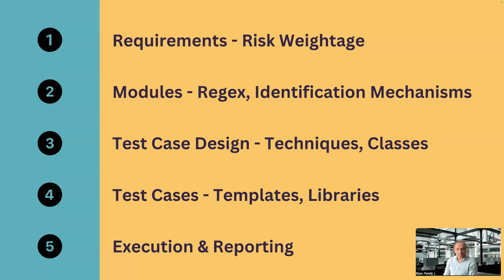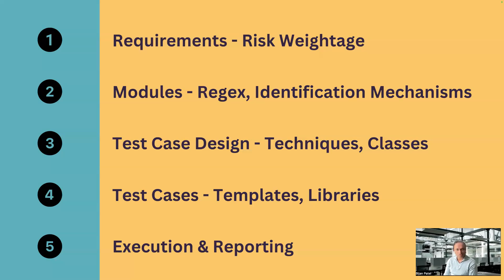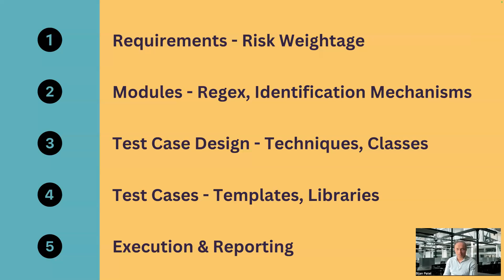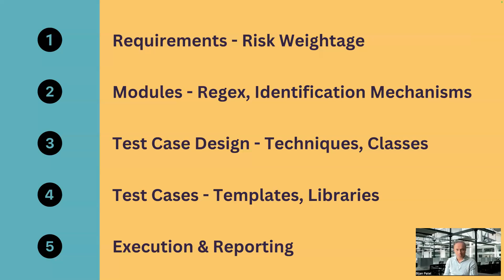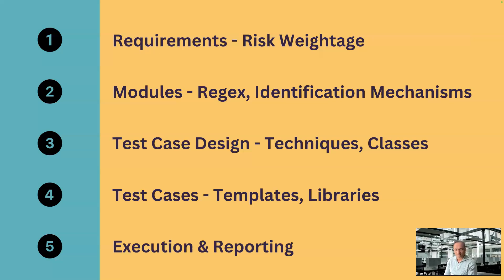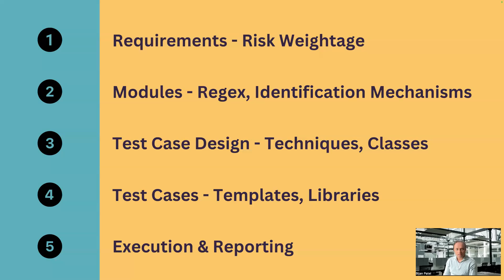Coming to the next point — modules. Here you can talk about all the standard modules which can be used to automate different types of applications. Also, we can scan different applications using the different Tosca engines which are available. In some scenarios where we have duplicate controls or controls with similar properties that are difficult to identify by Tosca, there are fall-back identification mechanisms available. We can also use regex or regular expressions in our properties so that we can identify controls which are not unique.